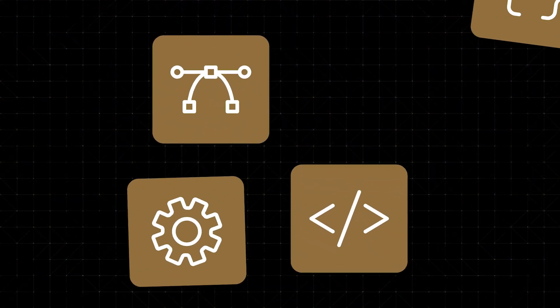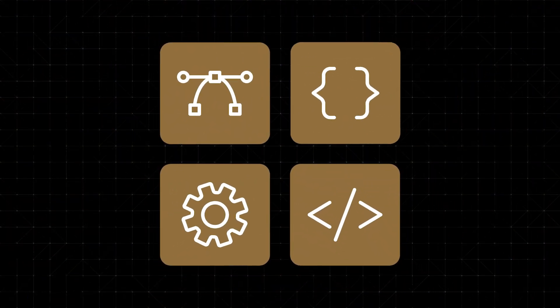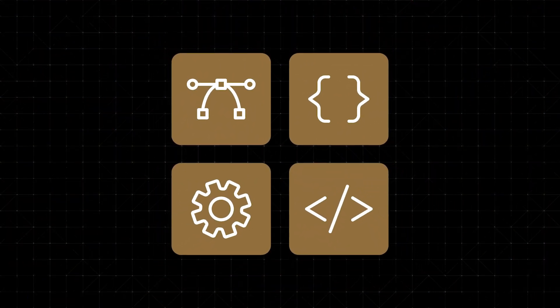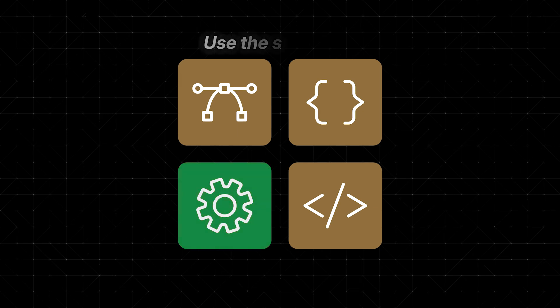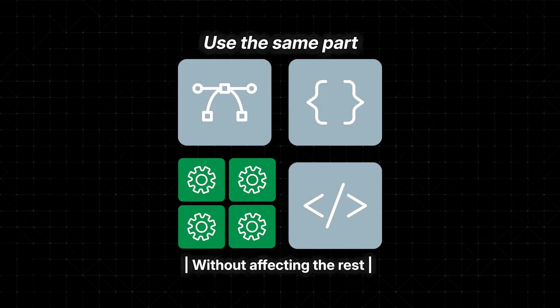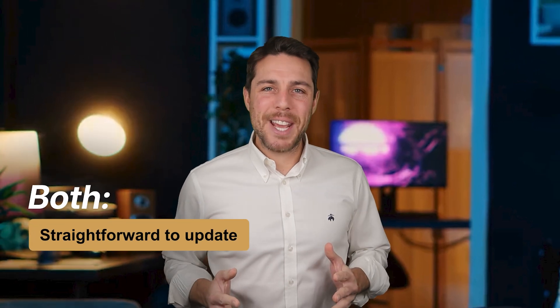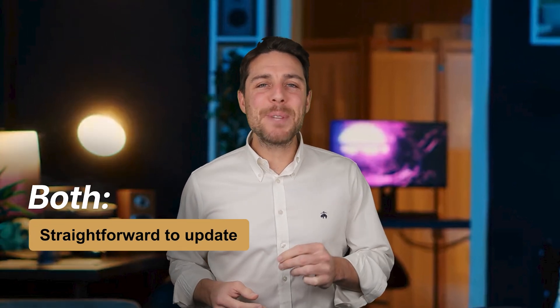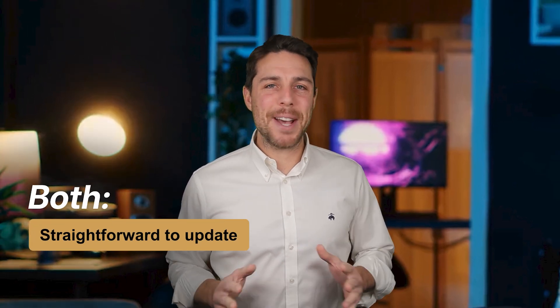Both use component-based architecture, a way to build software using recycled parts. You can build software by dropping in the bits you need, one part at a time, and you can use the same part multiple times without affecting the other components. So if you have something you need to happen in the same way over and over, it's easy and quick to do that. They're both straightforward to update, so you can update your apps without hassle.